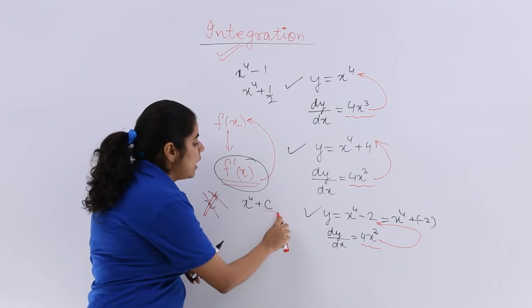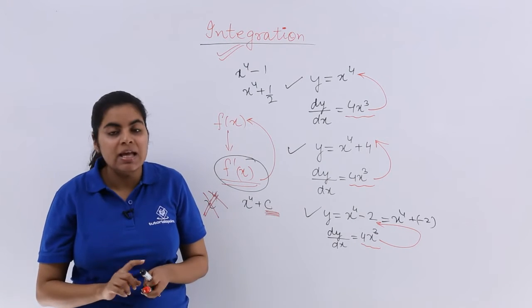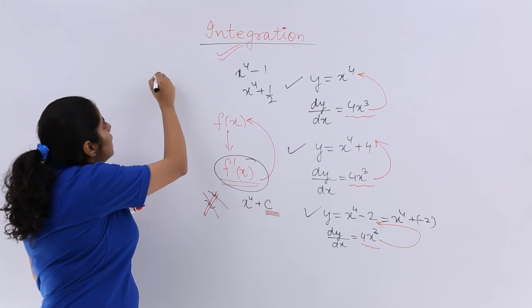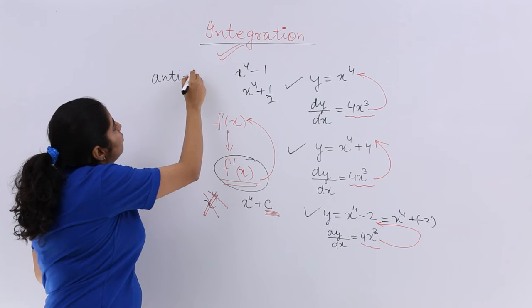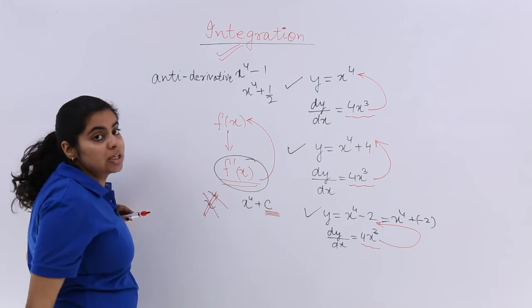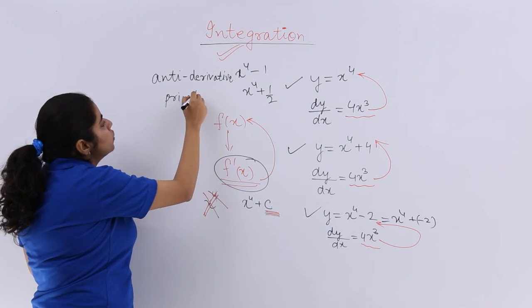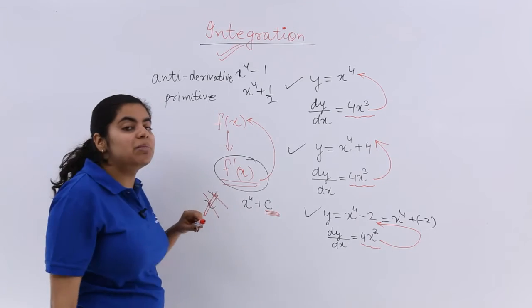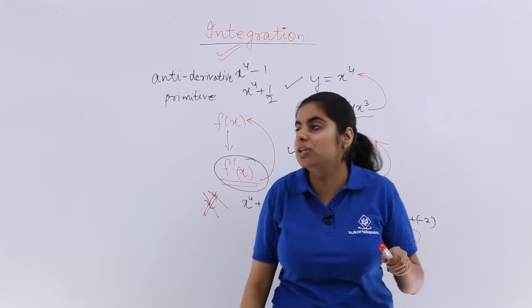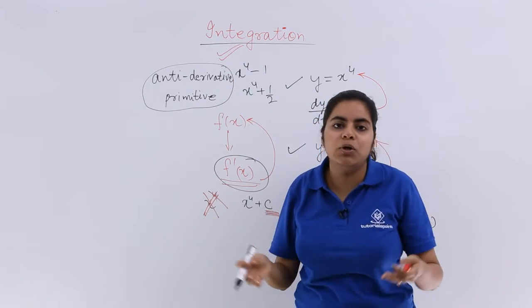So I have to add plus c to all my answers in integration. The first thing. And integration is also called as anti-derivative because you are basically going for the reverse process of differentiation. It is also called as primitive. So these words are also important because everybody will remember integration and differentiation. But people forget these names and when they come in the exam, they do not know what to do.